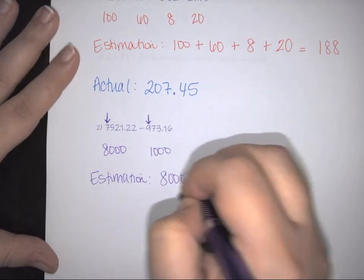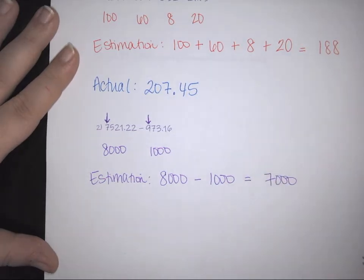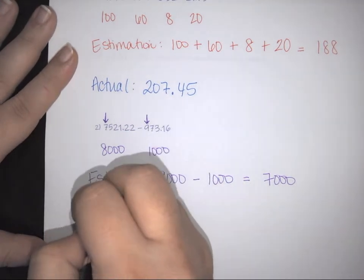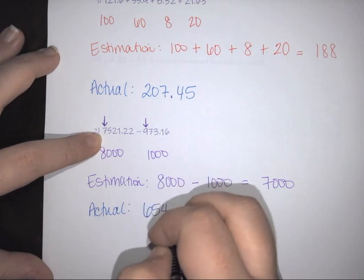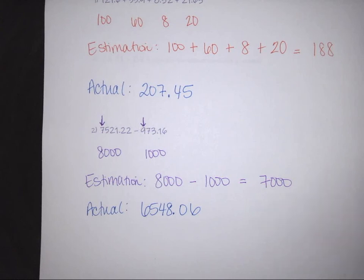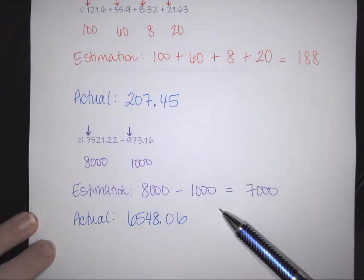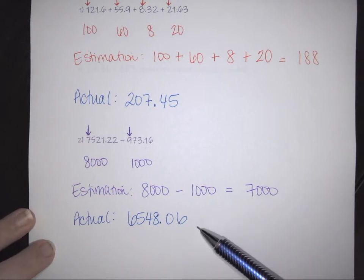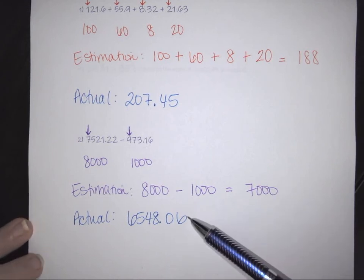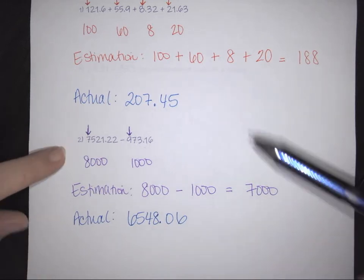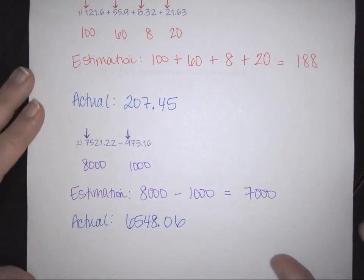The estimation is found by taking 8,000 minus 1,000, which gives 7,000. The actual result of subtracting these two numbers is 6,548.06. In the first example, the estimation came up short — less than the actual — while in this second example the estimation is larger than the actual. The point is the method being used: this estimation is directly tied to the rounding principle.